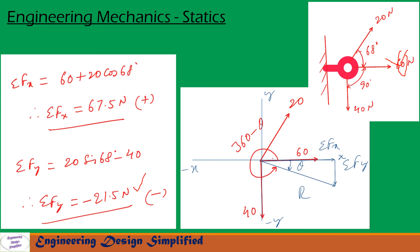So the resultant will be somewhere like on the horizontal positive 67.5 Newton and on the vertical negative y direction, sigma Fy is minus 21.5. So resultant will be somewhere like this and we need to find R and angle. So let us see in the next slide how to find.